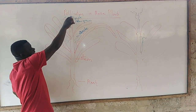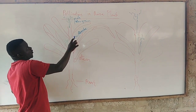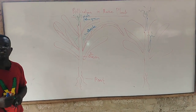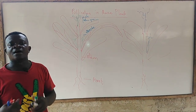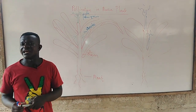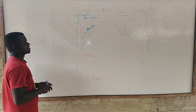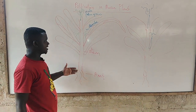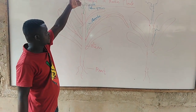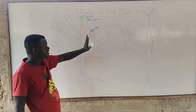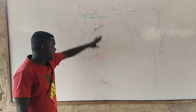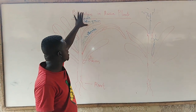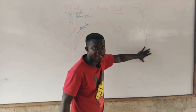We have two main types of pollination: cross pollination and self pollination. There are situations whereby the male and the female parts are located on one plant, and when the transfer of pollen grains from the male to the female occurs on the same plant, it is called self pollination.